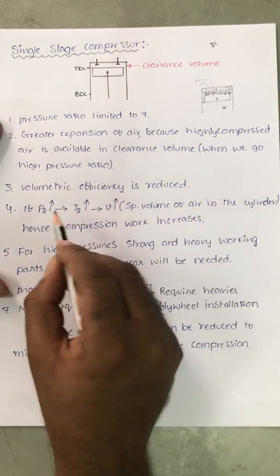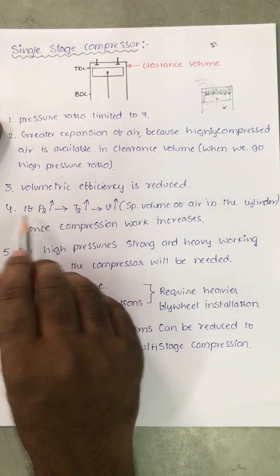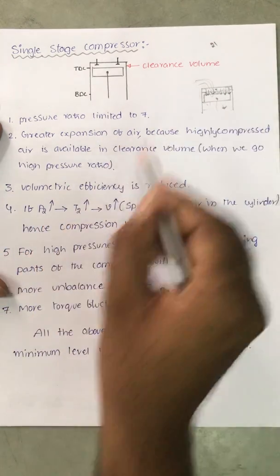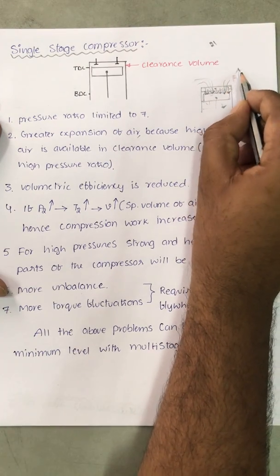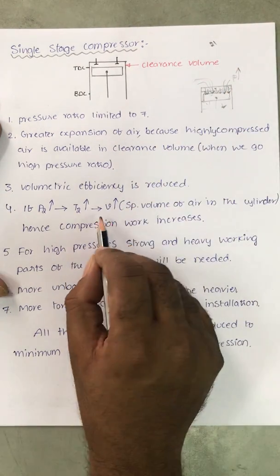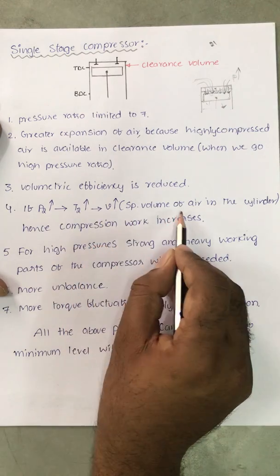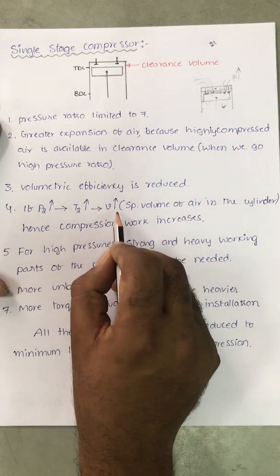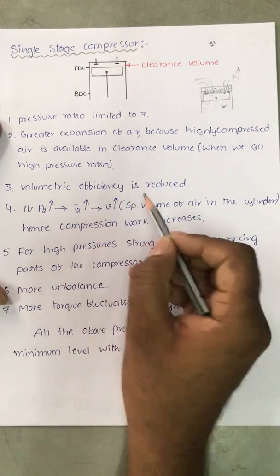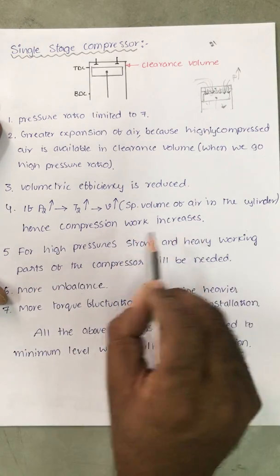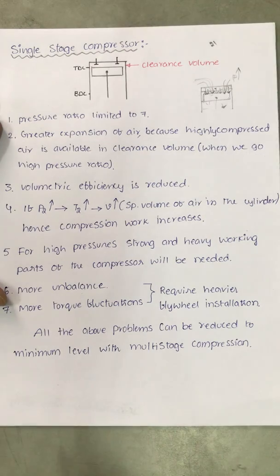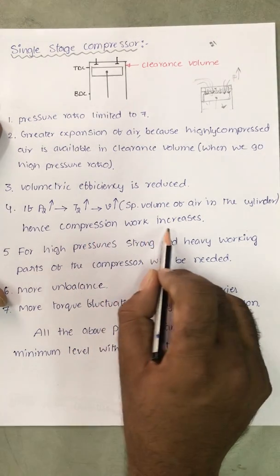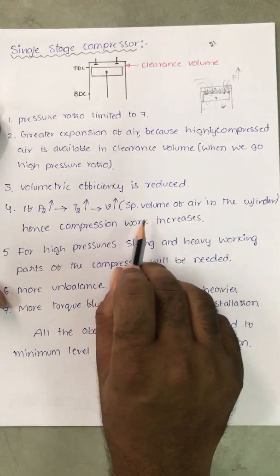If the exit pressure P2 is more, the temperature is also more. If we want to go for high pressure, the temperature of the air is going to be higher. If temperature is more, the specific volume of air in the cylinder increases. If specific volume increases, compression work increases — meaning to achieve high pressures, we need to supply more work input compared to multistage compression.